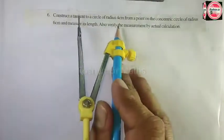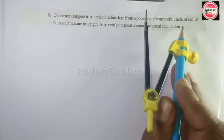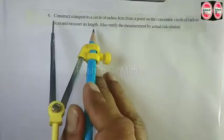Construct a tangent to a circle of radius 4 centimeter from a point on the concentric circle of radius 6 centimeter and measure its length. Also verify the measurement by actual calculation.